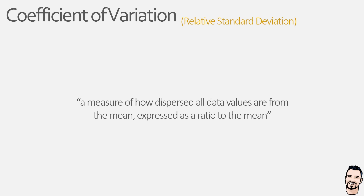A key question that is often asked is: if our standard deviation can show us the extent of variation within a data set, why would we need yet another method to look at variation? Well, by expressing the deviation relative to the mean, it allows the comparison of data sets which have vastly differing means, as we'll see later on.